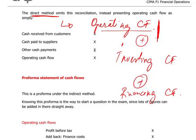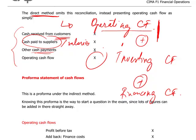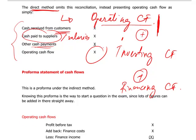The only part that differs between the direct and indirect method is operating cash flows. Under the direct method, you look at inflows and outflows from operating activities — the key inflow being cash received from customers, and the key outflows being cash paid to suppliers and salaries. However, if companies choose to use the direct method, they still have to prepare a reconciliation, which is effectively the operating cash flow calculation from the indirect method. So you choose direct, but you end up doing indirect in the notes to the financial statements anyway.